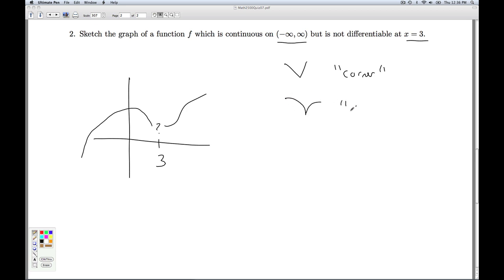We could have a cusp in which case the tangent lines, the slope of the tangent lines from one direction approach infinity and the slope from another direction approach negative infinity. We could have a vertical tangent in which it just gets too steep. So if I look at the limit of the difference quotient from both directions, it approaches either negative infinity or positive infinity from both sides. So these are three common ways for a function to fail to be differentiable at a point but yet still be continuous there.